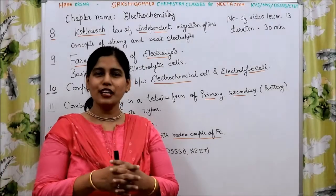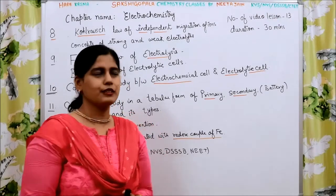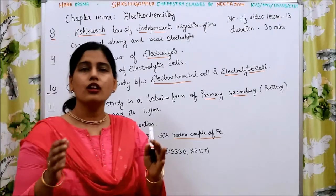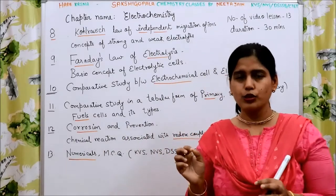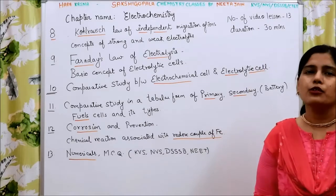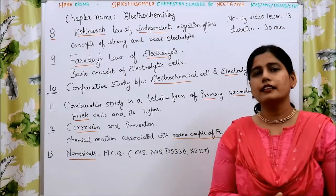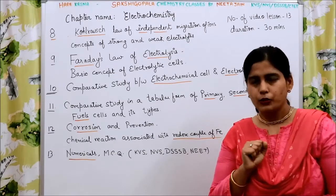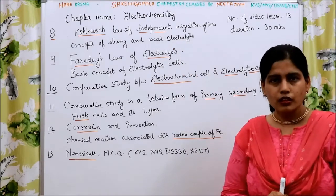In module number 8, we will learn Kohlrausch's law — a very important law in electrochemistry: Kohlrausch's law of independent migration of ions. In the same module, we will understand the difference between strong electrolytes and weak electrolytes. These two points are covered in video lesson number 8.